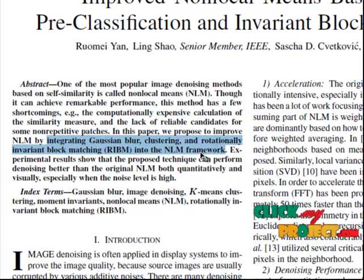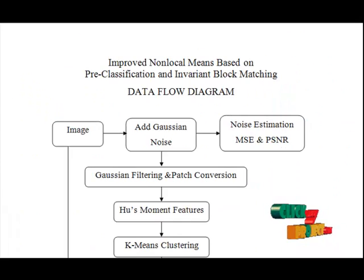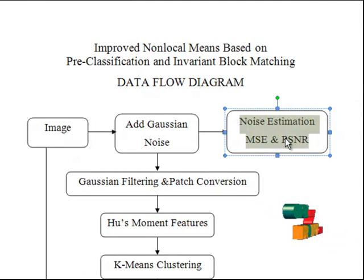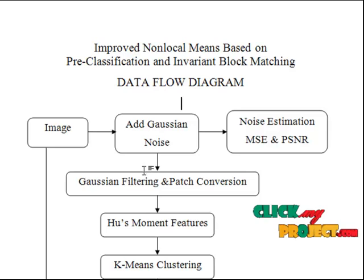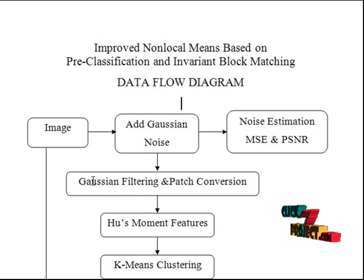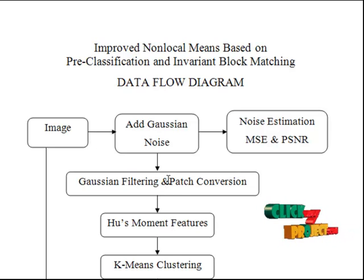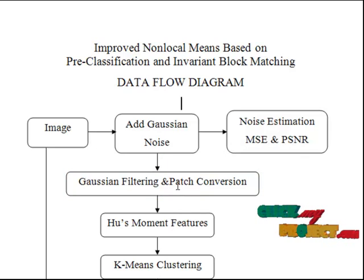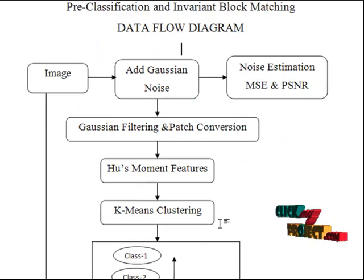Let's discuss the data flow diagram. Consider an image and add Gaussian noise to it. Estimate the noise parameters using MSE and PSNR. Then subject the Gaussian noise image to a Gaussian filtering algorithm and convert the images into patches. Hereafter, you will be proceeding only with the patches. For each of the patches converted,